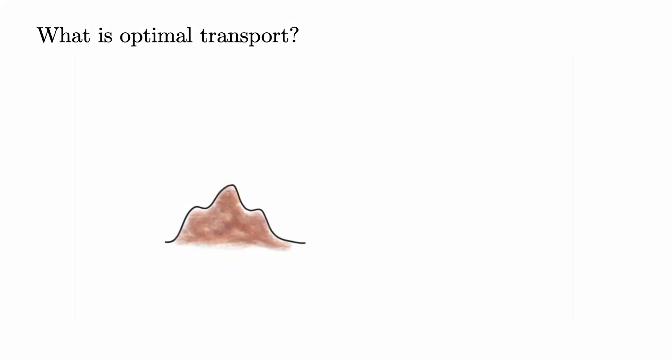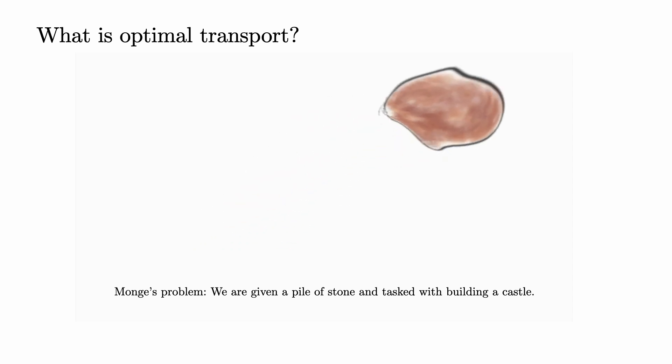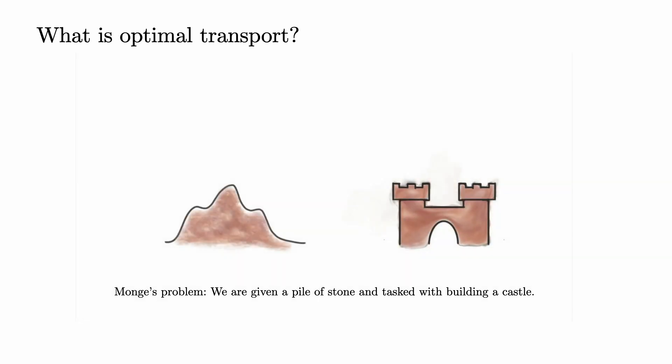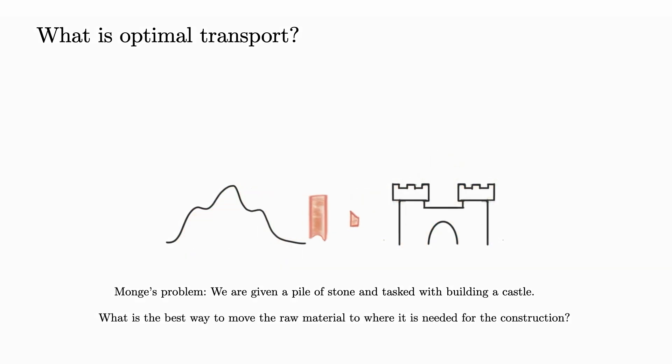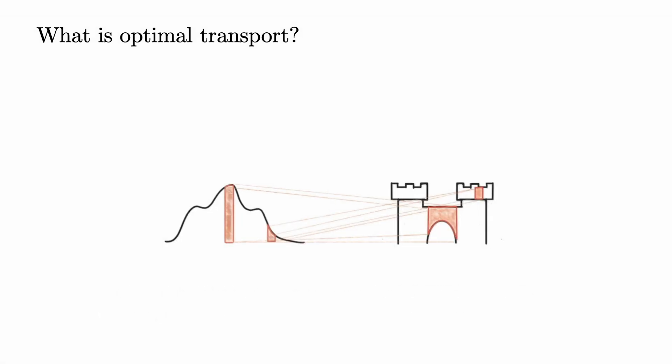Optimal transport was introduced by Gaspard Monge in 1781. In its original formulation, the central question was the following. We are given a pile of stone, or some other raw material, and must use it to build a castle. In order to do so, we need to move, that is transport, the stone from the pile to the worksite. We want to find the most efficient way to move the rock, so as to minimize the total amount of work we need to do.